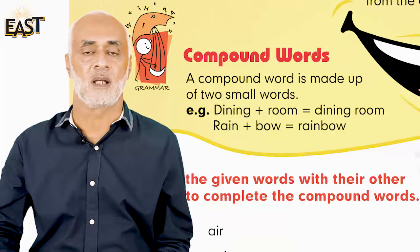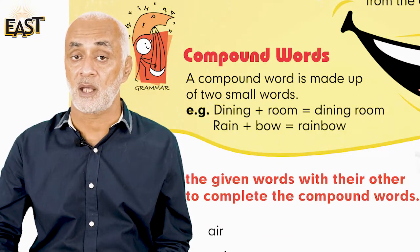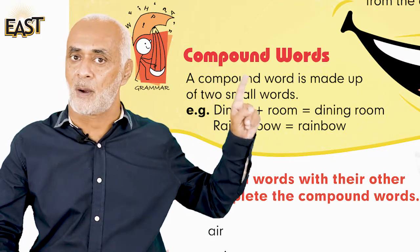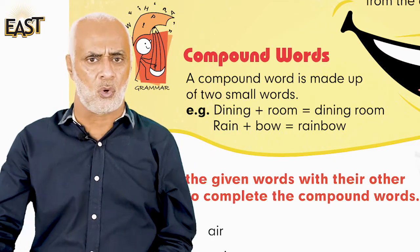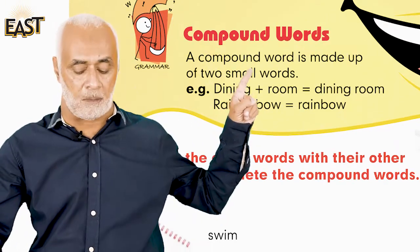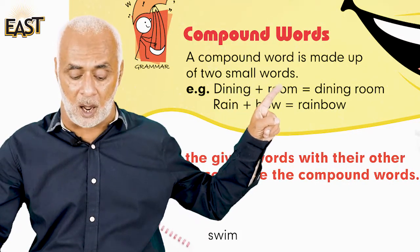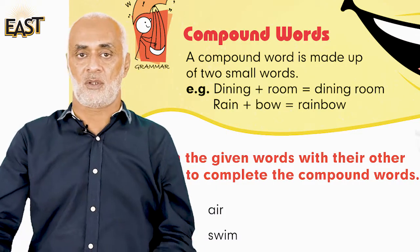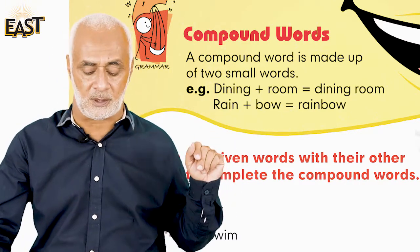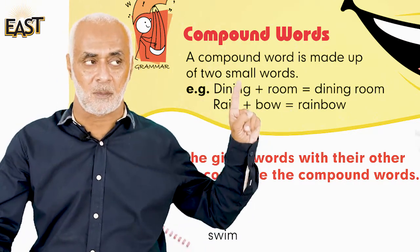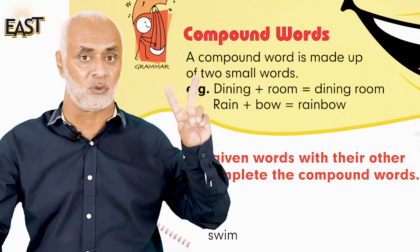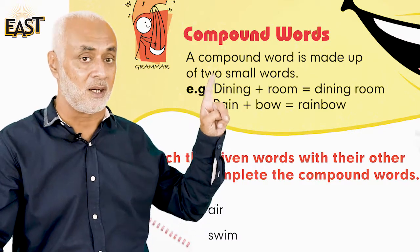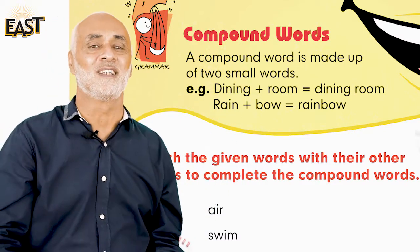Assalamu alaikum students, now it's time to do some English work and we will be making some compound words. A compound word is made up of two small words. For example, dining plus room — when you join dining and room it becomes dining room.